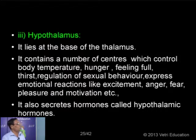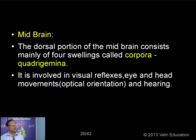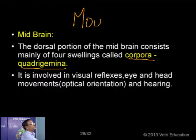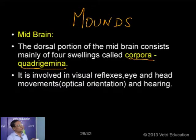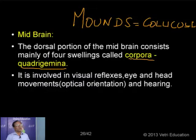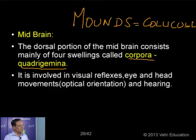Now let us pass on to the second part of the brain — the midbrain, also called the mesencephalon. Taking the midbrain region, the roof of the midbrain region has four swellings. That is why normally the midbrain is also called corpora quadrigemina. The four swellings are simply called mounds, also called colliculi. These mounds are four in number: two of them are superior in position and two of them are inferior in position. Accordingly they are named superior colliculi and inferior colliculi, together forming corpora quadrigemina.